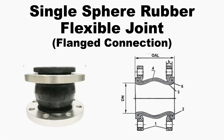Hello everyone. Today, I would like to show you how to create a single sphere rubber flexible joint Revit family. In this video, I will use and load in the created PN16 flange Revit family which is parameter controlled by lookup table. I will refer to those dimensions in the picture to create the parameters.